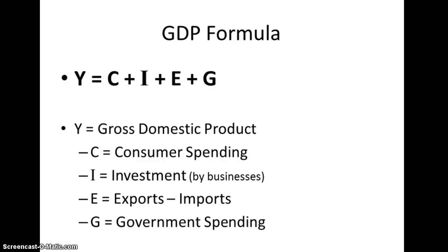I'm going to skip to G, which is government spending. The government also spends — it spends money to pay for education of students, to protect citizens through police and firefighters, and to build roads. So the government spends money just like consumers spend money and just like investors spend money.